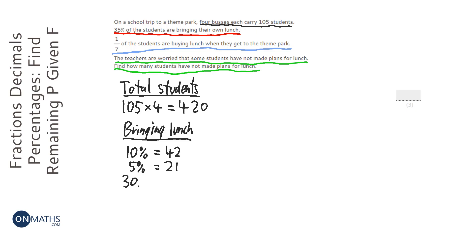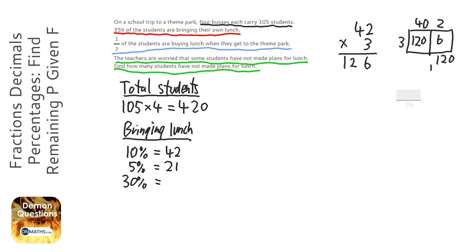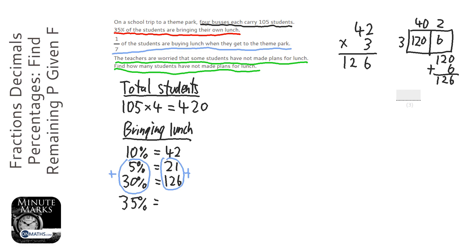Next we need to work out 30%, because we need 35%. And all we do is times the 10% by 3, so 42 times by 3. You can use any method you want, a lot of you probably prefer doing the grid, which is absolutely fine, so 42 and 3. Obviously if it's on the calculator paper you can just use a calculator, but either way you get 126. Now 35% would be these two added together, because 5 plus 30 is 35. So 35% is going to be 126 plus 21, or the other way around, 7 for 1, so 147. So 147 students are bringing lunch.